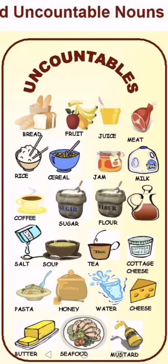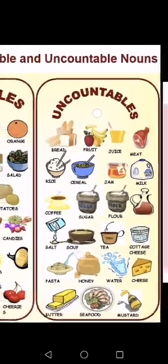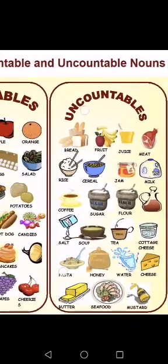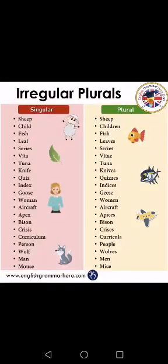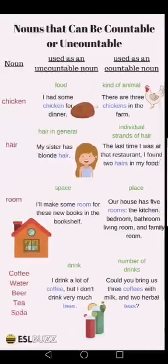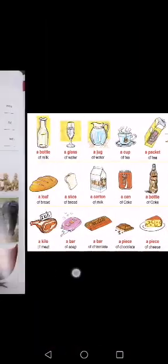Other uncountable food items include: meat, rice, cereal, jam, milk, coffee, sugar, flour, salt, soup, tea, cottage cheese, pasta, honey, water, cheese, butter, seafood, and mustard. These are all uncountable food items.